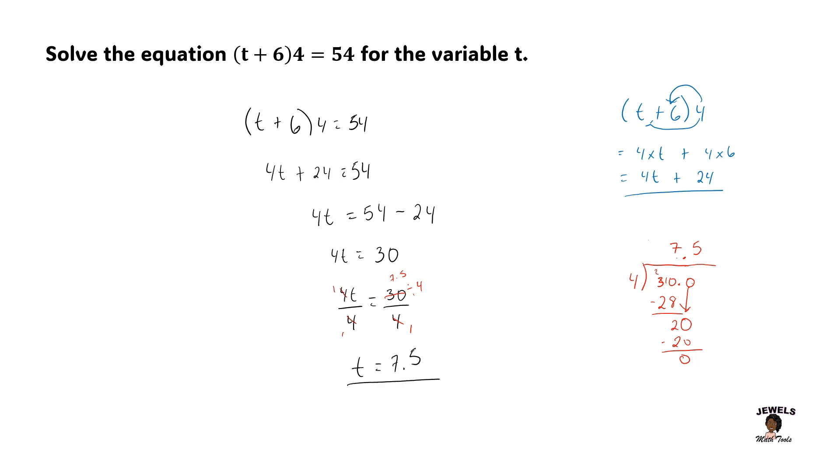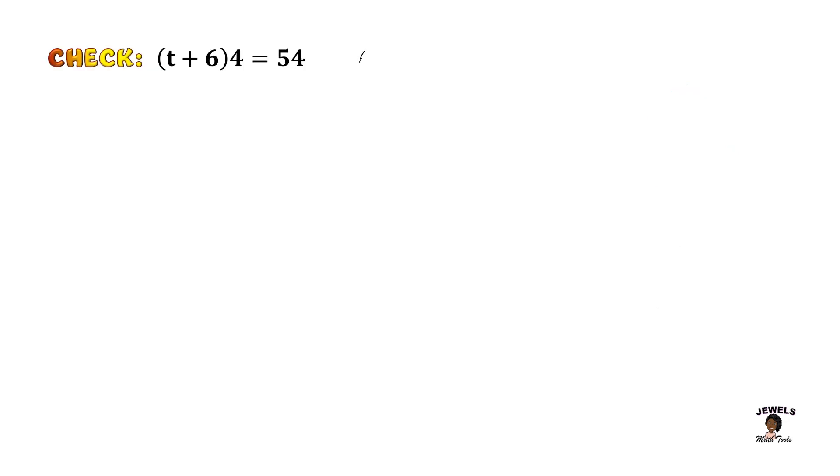And as always, once you are done solving this equation, I always recommend that you go back and check your answer. Do not just leave the answer and assume that it's right. If you have the opportunity to check, by all means, check your solution. So if we set that t is equal to 7.5, we are now going to be substituting t everywhere that it appears in our equation with my 7.5. And just like I did before, I will show you that you can check using the distributive property as well as using your rules for PEMDAS.